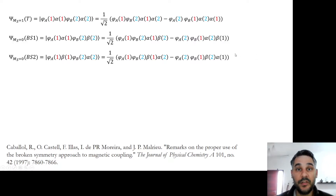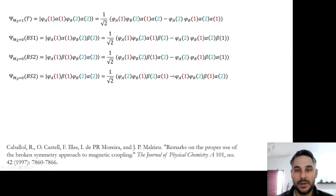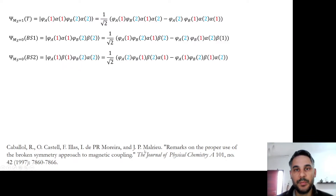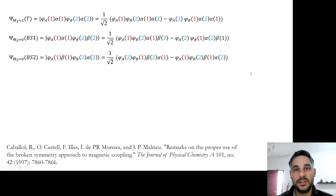For the purposes of the following derivation we are going to change the sign of the broken symmetry 2 solution. We have flipped the sign of the total wave function. That is to get into the same notation as that used by Malrieu and collaborators in the reference below. We are just changing the sign of one of the broken symmetry solutions — we are not altering the physics of the problem.